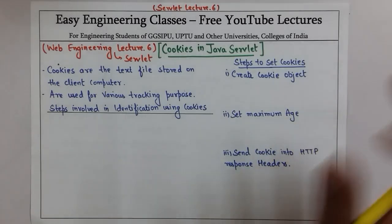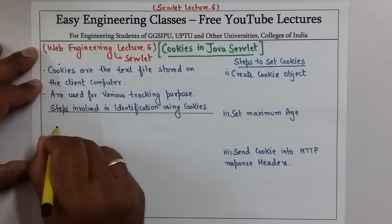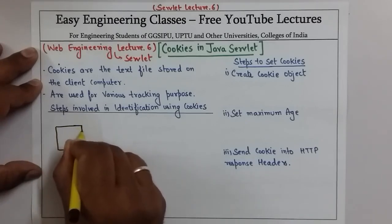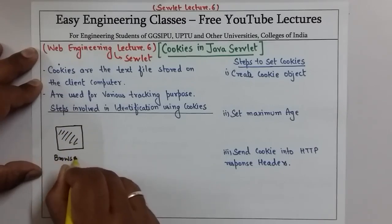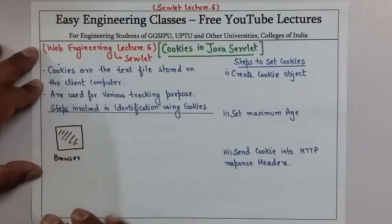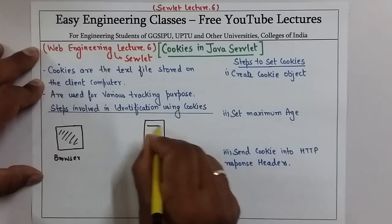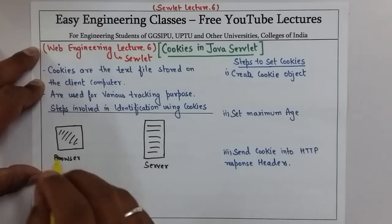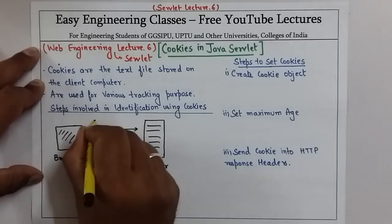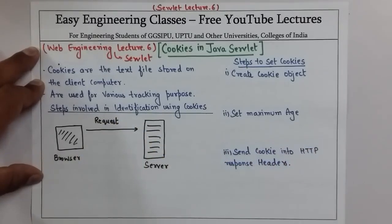There are basic steps involved in identification using cookies. We will see this with the help of a diagram. Suppose this is a browser on the client side, and this is the server. Initially, for the first time, the client sends a request to the server with some information like username, password, location, etc.